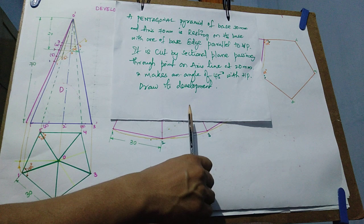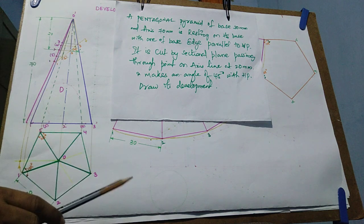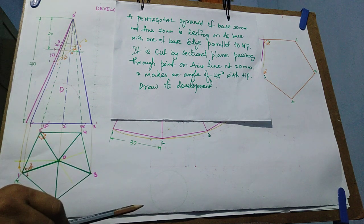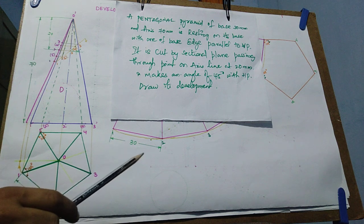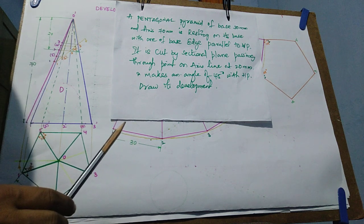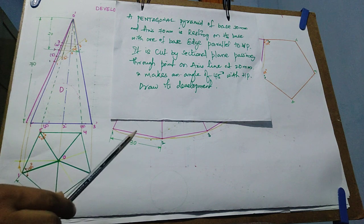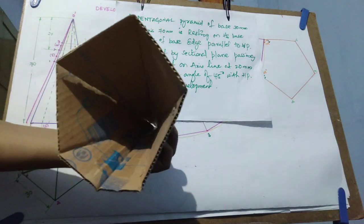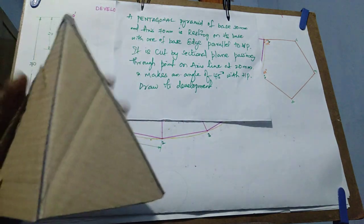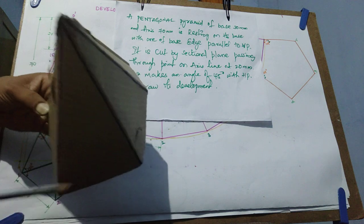Based on this question we will develop the pyramid. The pyramid is resting on its base with one edge parallel to the vertical plane. The top view is the true shape for it, so we have to draw the top view first, then go for the front view diagram, and later go for the development. In the top view, the shape we get is a pentagonal shape. You can see the pentagonal shape of the pyramid, and in the top view you will get the pentagonal shape with the apex.